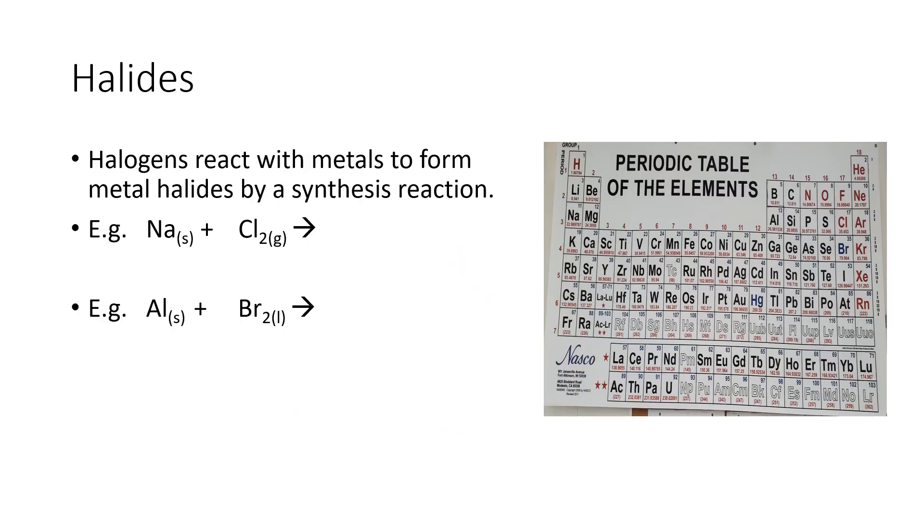The first type we're going to look at are halides. If you react a metal with a halogen you'll end up with a halide. So sodium chloride is a halide, it's a solid crystal, and you need to balance that with a two there and a two here.